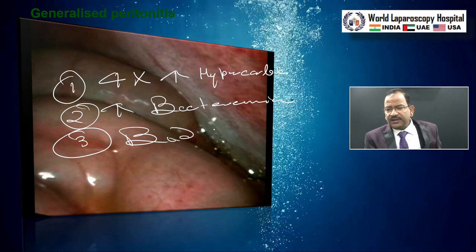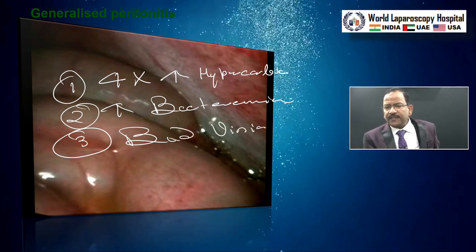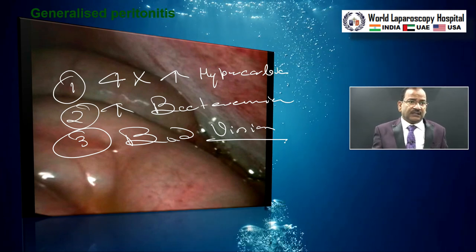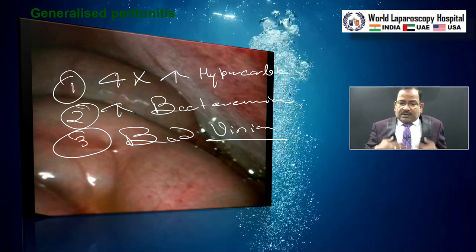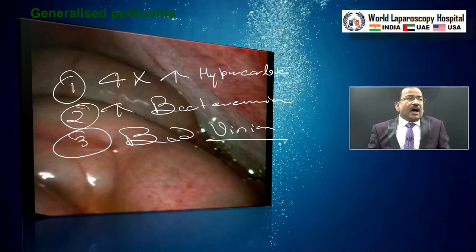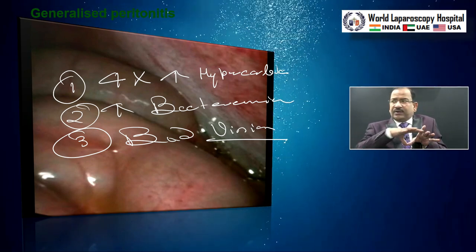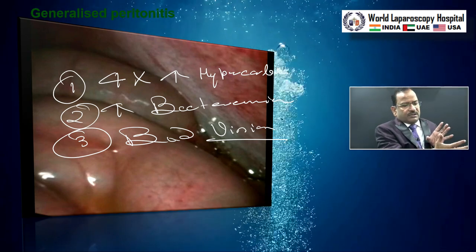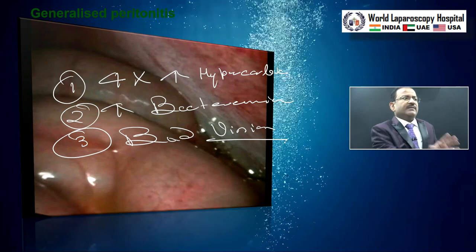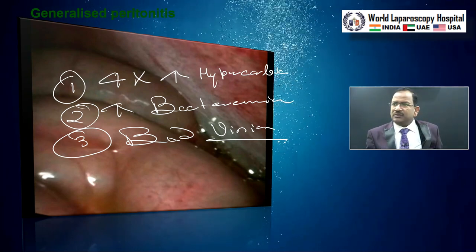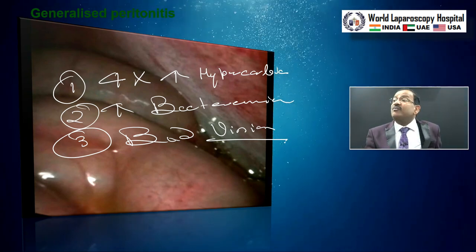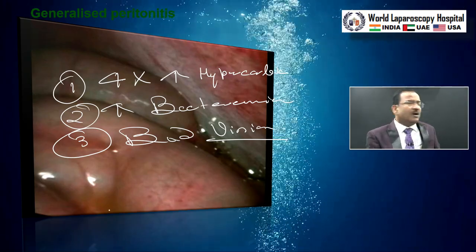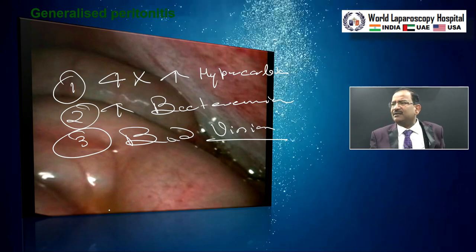The third problem of generalized peritonitis is bad vision — very bad vision. A healthy peritoneum acts as a reflector of a torch. Our abdominal wall, once we distend it, becomes like the reflector of a torch, and once the CO2 goes in, light returns back and reflects back. So there will be improved vision. But an inflamed, red peritoneum absorbs all the light — you will not see anything in an inflamed case.